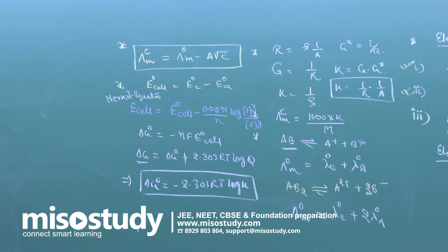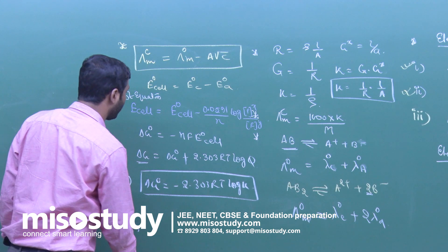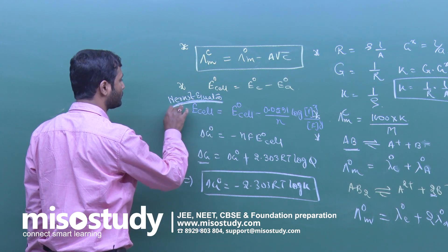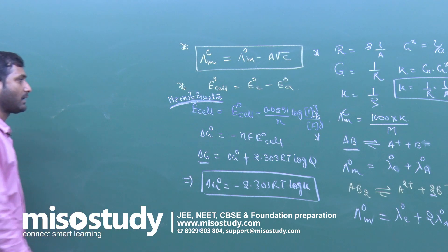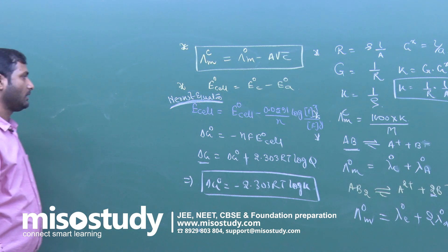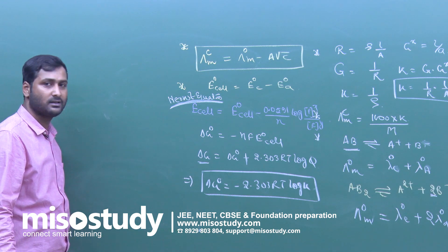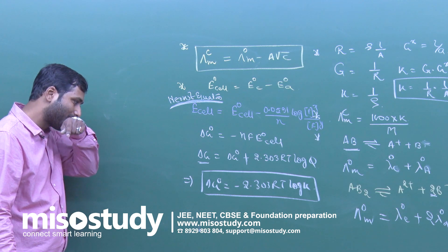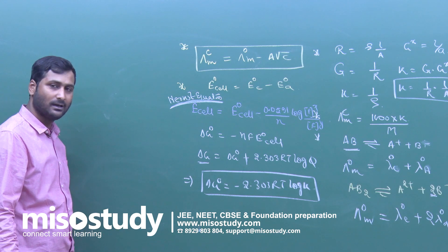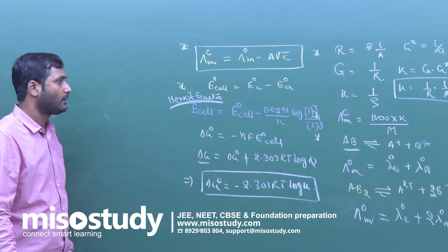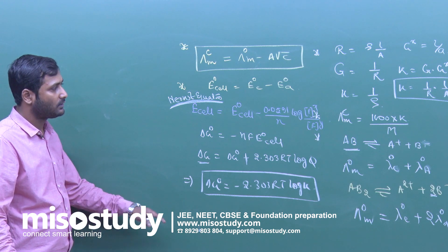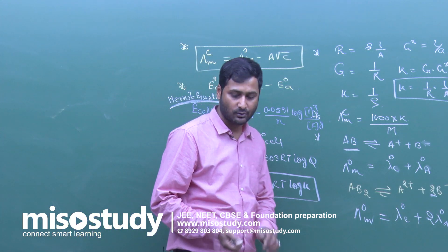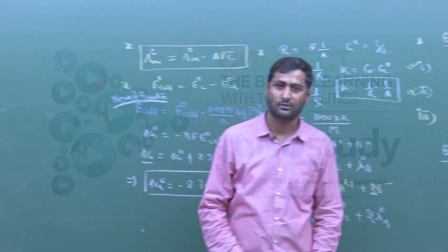Delta G = delta G° + 2.303RT × log Q. At equilibrium, delta G = 0, so delta G° = −2.303RT × log K. Using these formulas you can solve problems related to electrochemistry. Generally, the maximum number of questions are asked from the Nernst equation and the electrochemical series, which is the arrangement of elements or ions as per their standard reduction potential values. If you have command over these formulas, you can solve the maximum number of questions from electrochemistry.